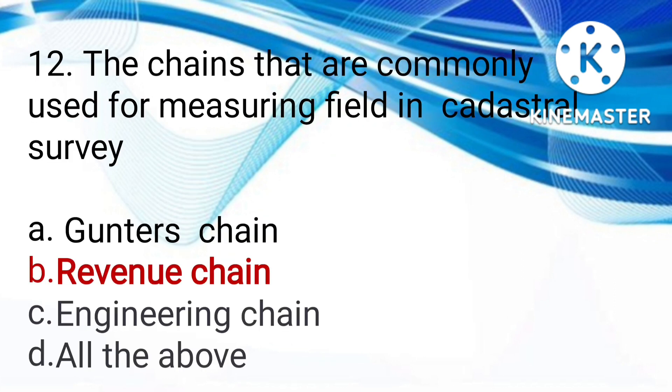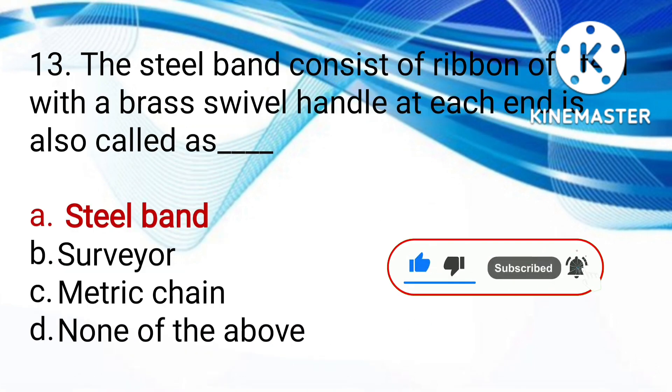The chains commonly used for measuring field in cadastral survey are gunter chains, revenue chains, engineering chains, or all of the above. Revenue chain is used where that survey is called cadastral survey. The steel band consists of ribbon of steel with a brass handle at each end. It is also called steel band, surveyor, metric chain, or none. The answer is steel band.